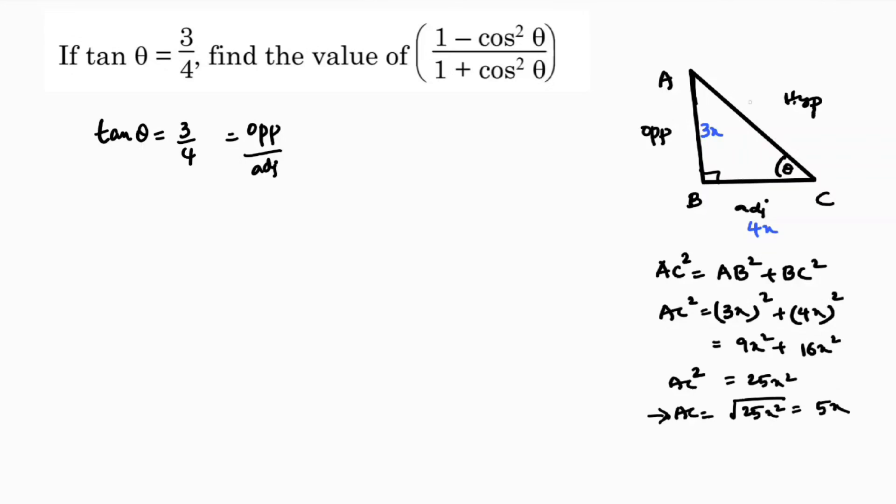So AC is 5x. Now I need to find (1-cos²θ)/(1+cos²θ). Here cos θ ratio is adjacent by hypotenuse, so adjacent is 4x, hypotenuse is 5x, so cos θ is 4/5.